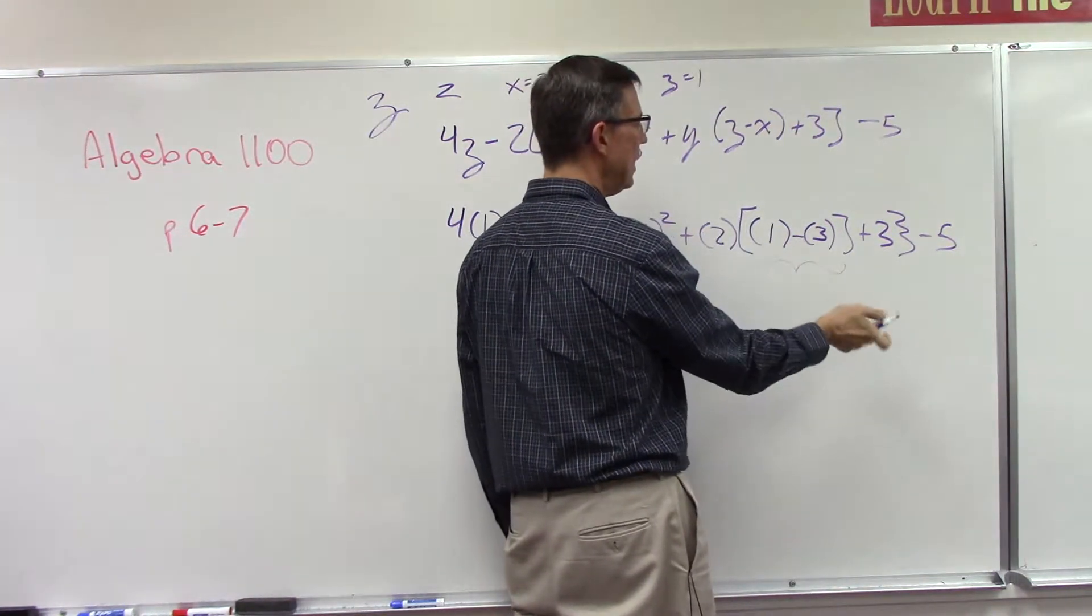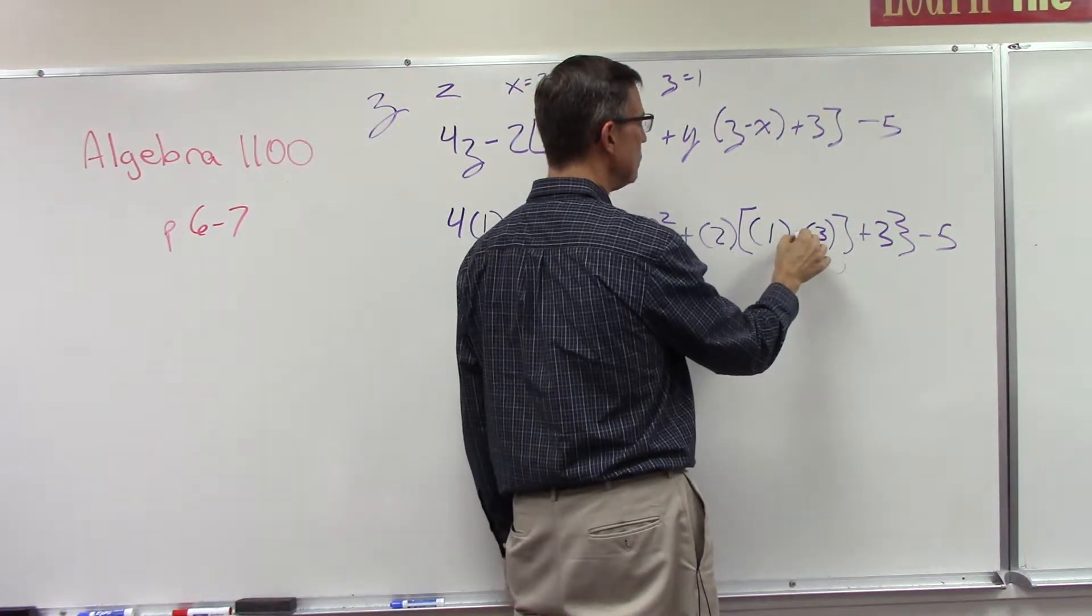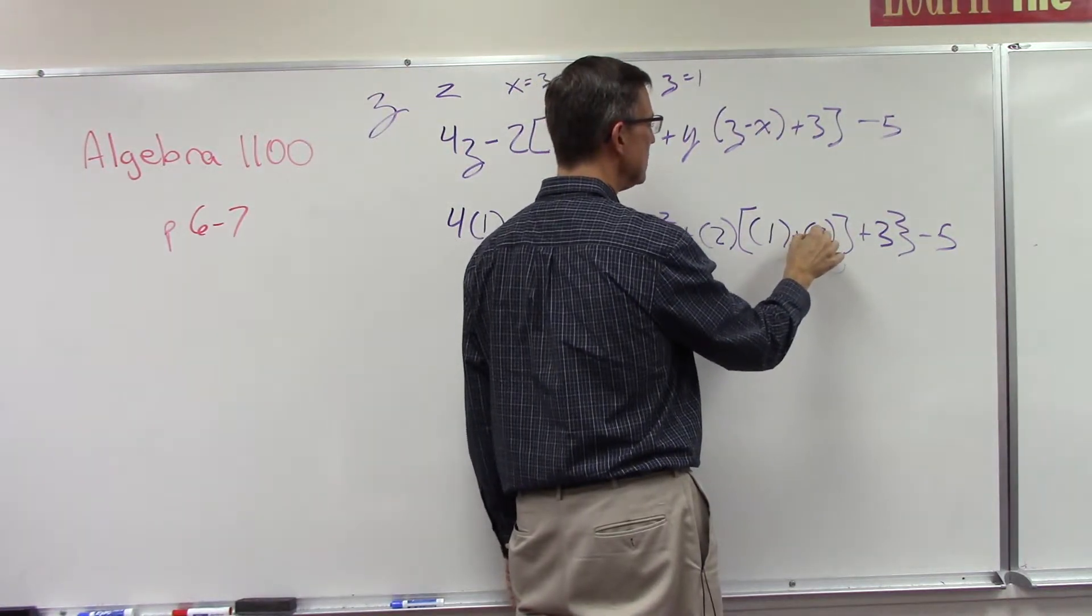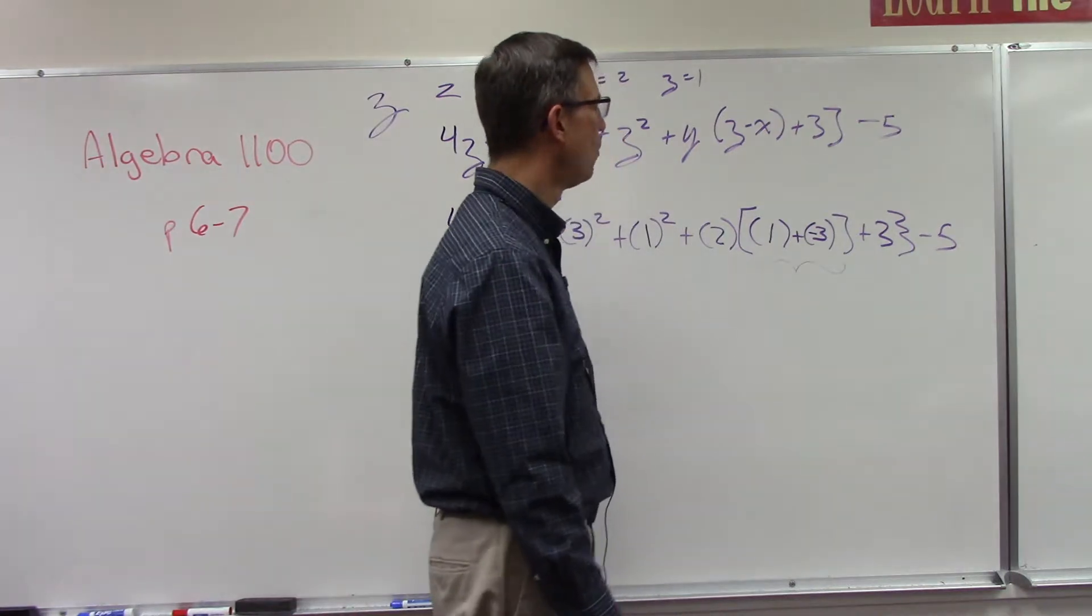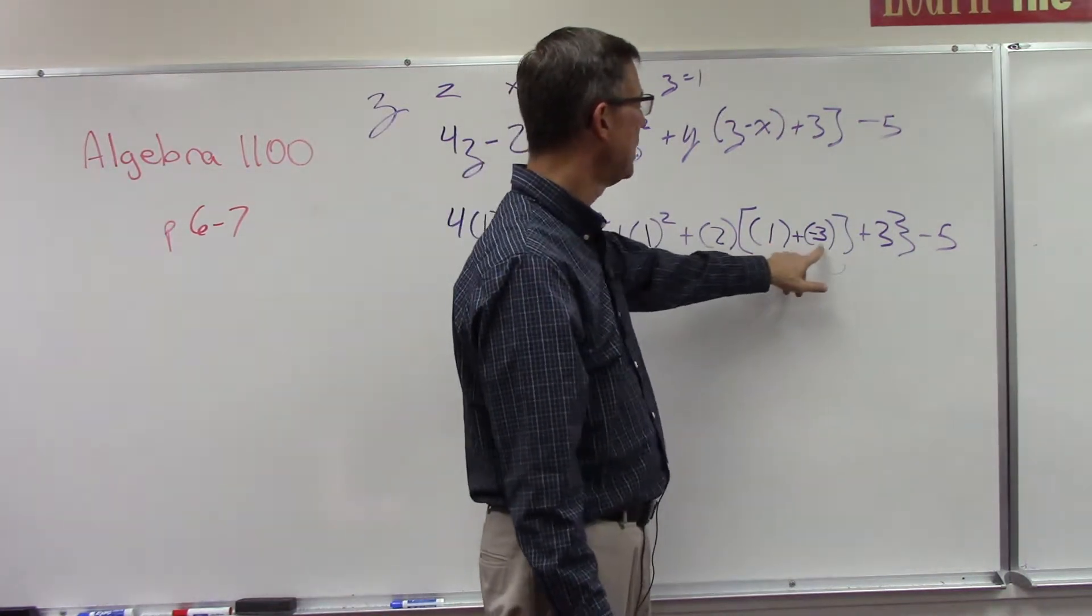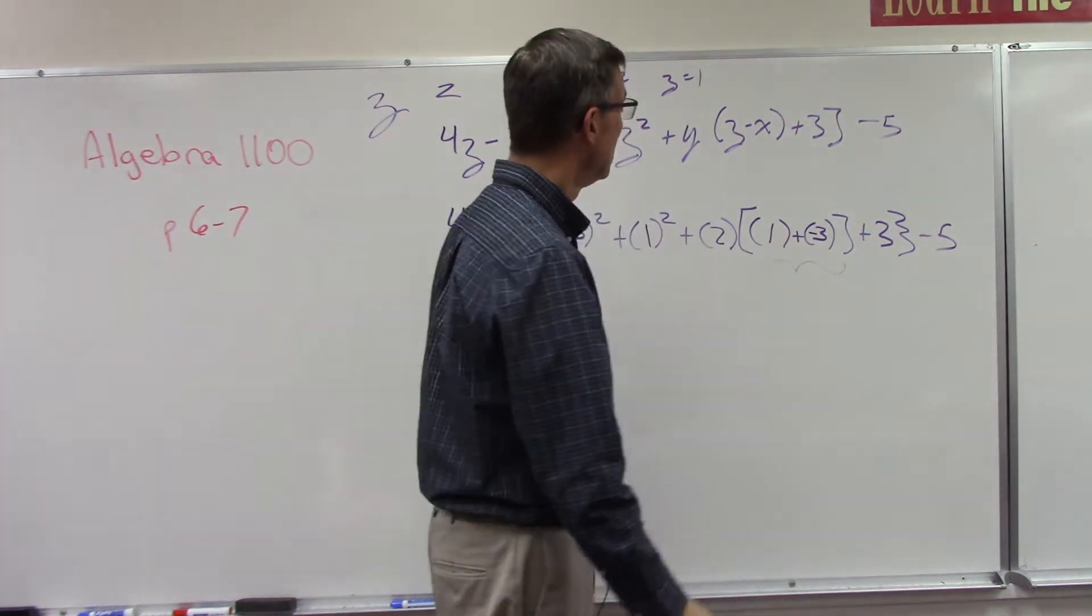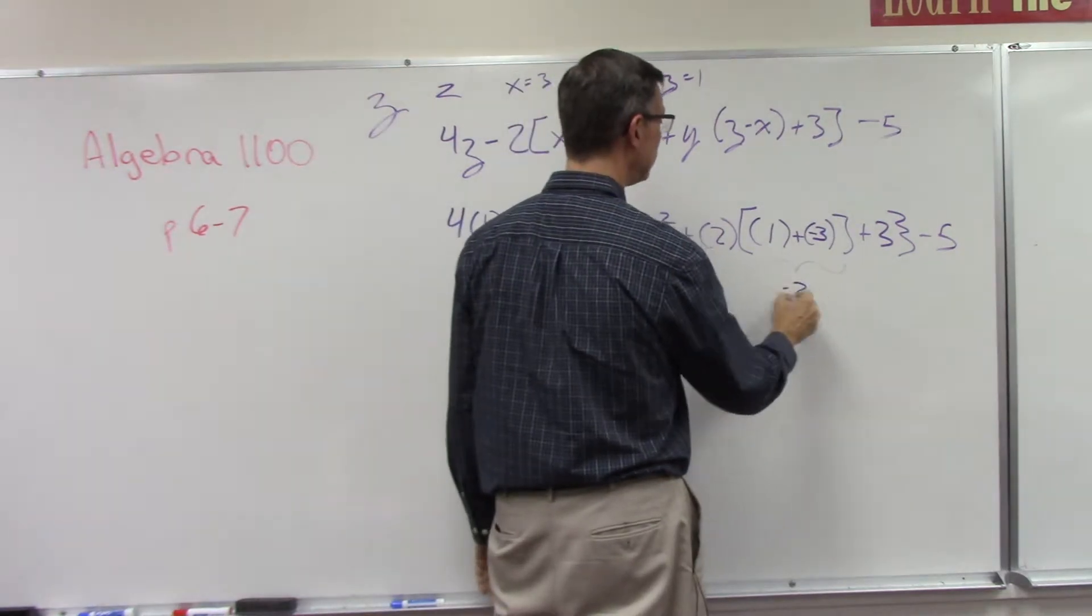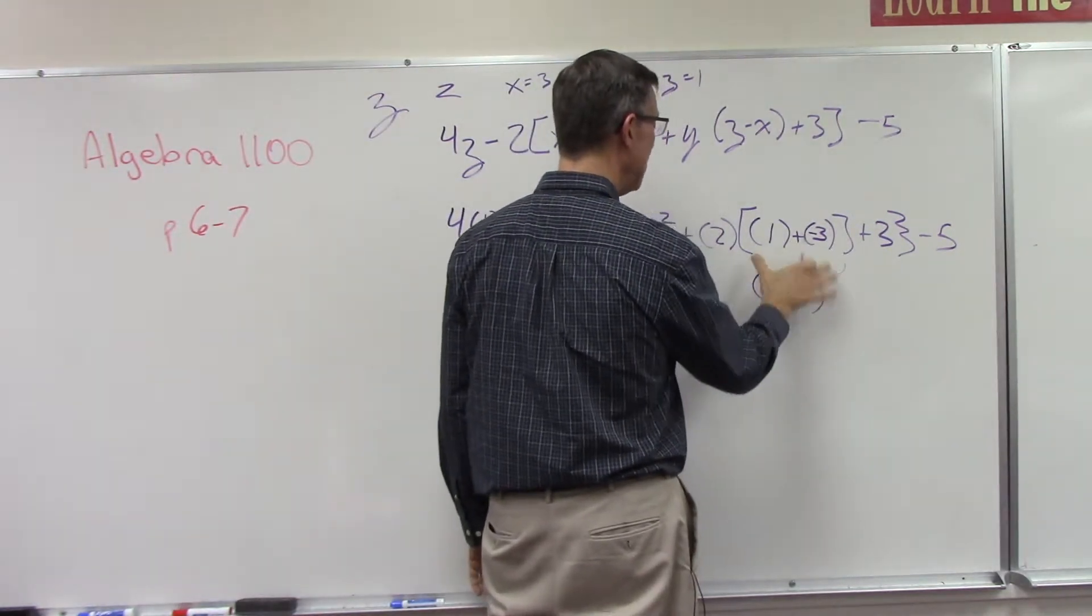Again, I always like to change it to subtraction to adding and change the second number to its opposite. So I'm adding one plus negative three, so I have negative two. And then right outside of that I have a two, and then a three.